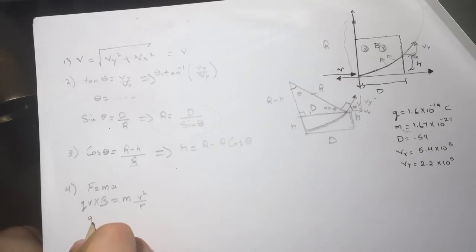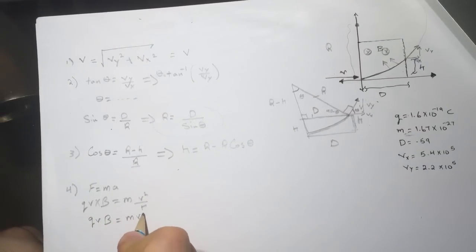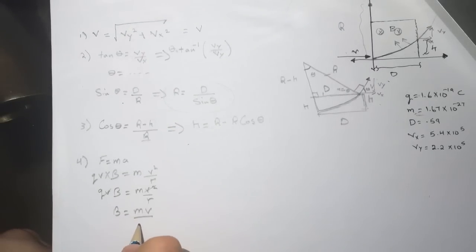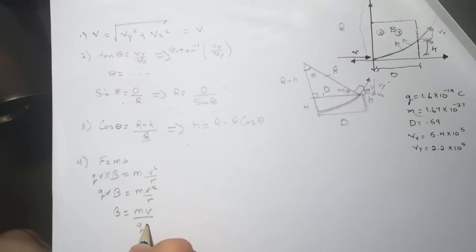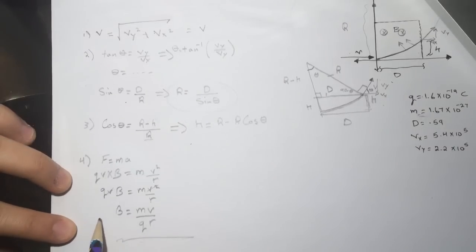All right, so QVB equals MV squared over R. So we can cross the V, then we're going to find the B. So B is MV over QR. Yes, it's correct. All right, cool.